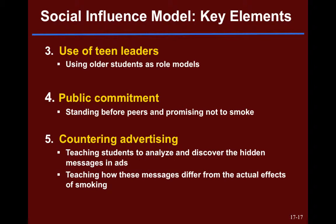The third element of the social influence model is using team leaders — older students as role models. We have a program here in Southern Nevada called Expose, which uses team leaders from the alternative music scene who take a stand as anti-tobacco ambassadors and act as role models for not smoking. The fourth element is public commitment — standing before your peers and promising not to smoke or use other substances. That public commitment can be really powerful with teenagers and helps reverse peer pressure trends.